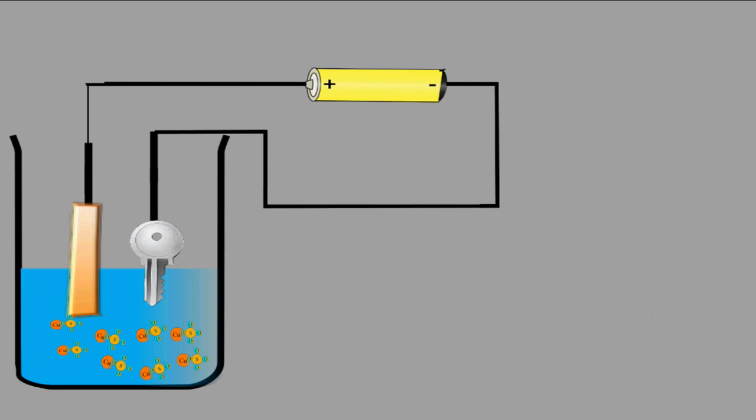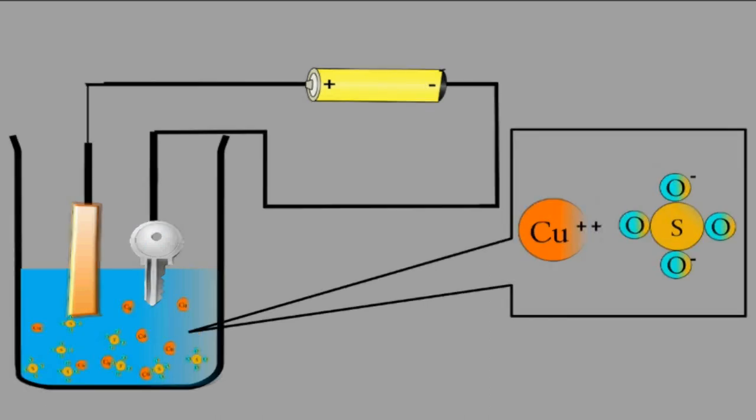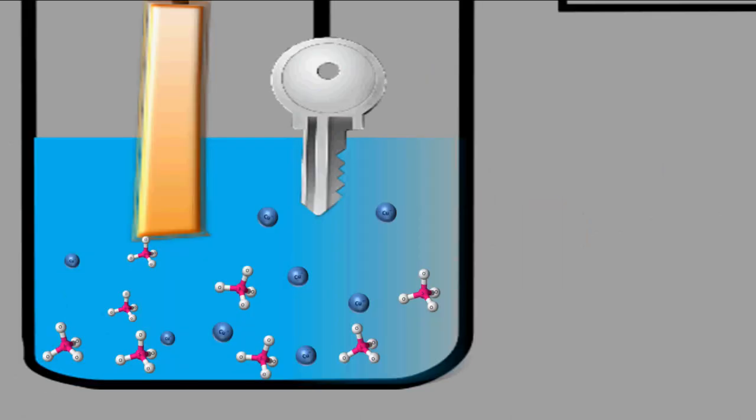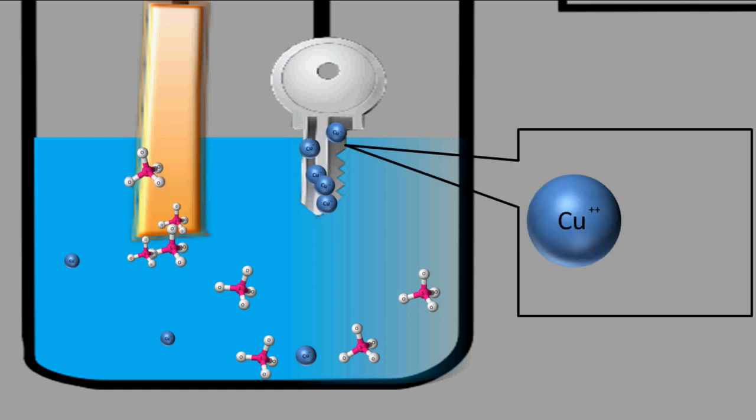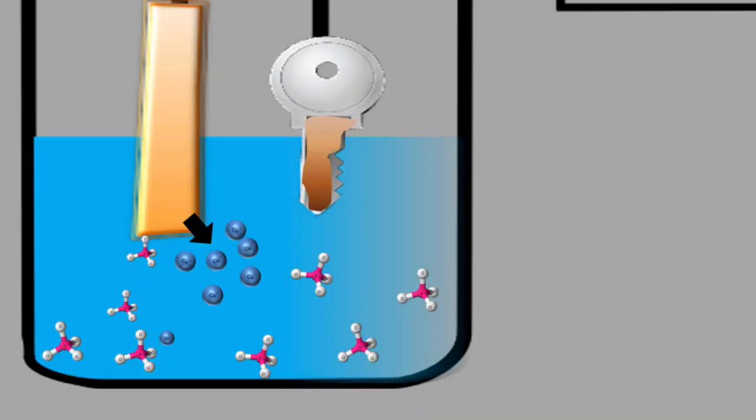Now let's see how electroplating works. When electricity passes through the copper sulfate solution, copper sulfate molecules break down into copper and sulfate ions. Copper ions which are Cu++ get attracted to the negative electrode. Here the negative electrode is the key. Then copper ions receive electrons from there and turn into neutral copper atoms. Thus copper is deposited on the key. When copper is deposited on the key, the copper plate supplies copper ions to the solution, and that's why the copper plate starts eroding.